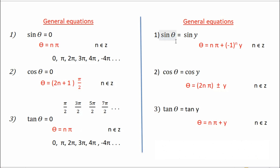In the second category, when sin θ = sin y, we have θ = nπ ± (−1)^n · y. Here you also need to define n — always remember to write that n belongs to integers. Don't forget to write this; you need to define it properly.